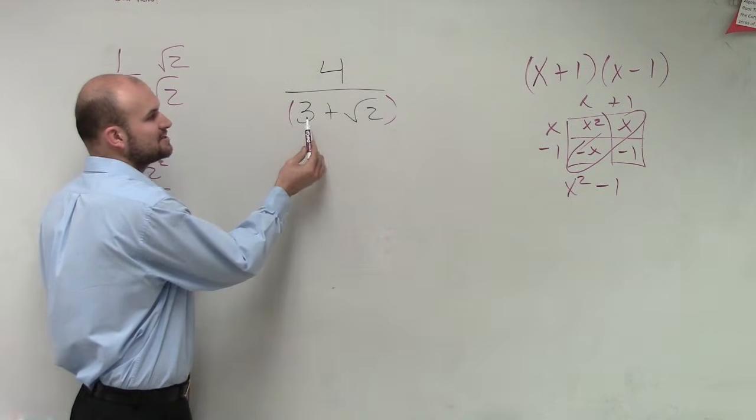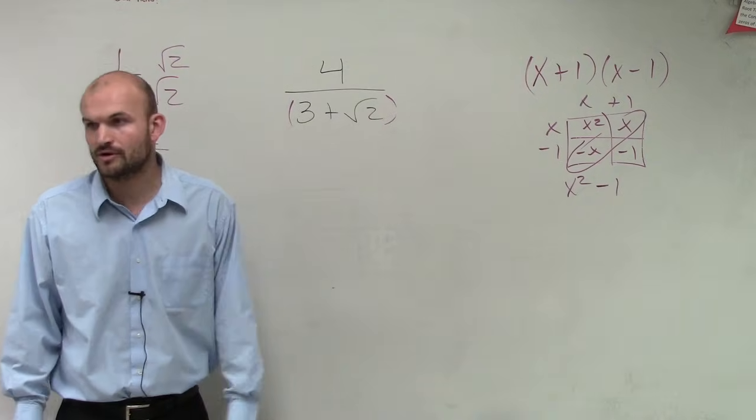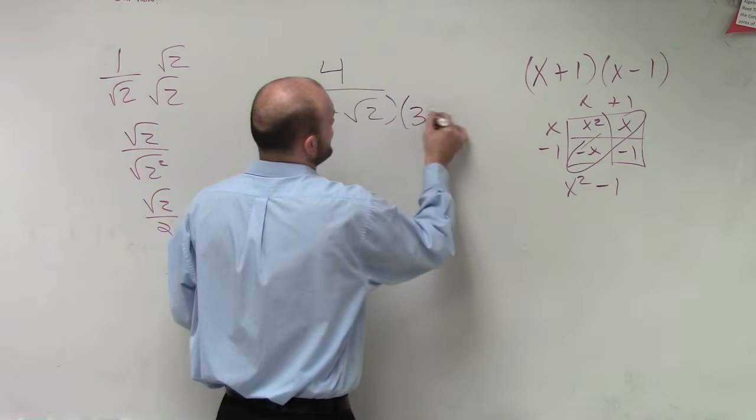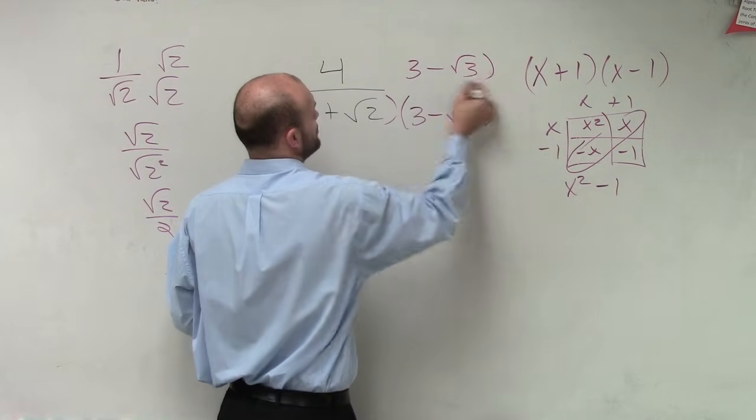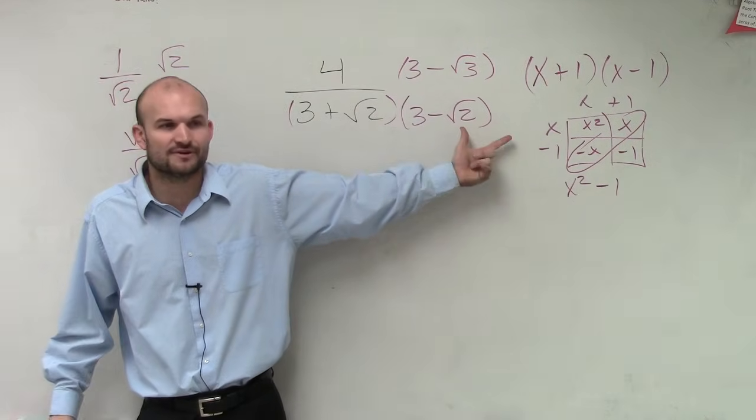Now, ladies and gentlemen, if I just multiplied my first 2 terms and my last 2 terms, would I then get rid of my square root? So let's multiply by what we call the conjugate. And the reason why we multiply by the conjugate is notice the conjugate is going to create a difference of 2 squares.